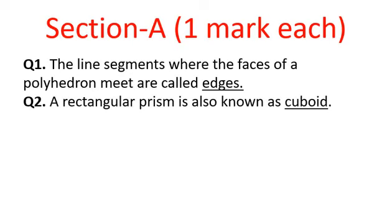Coming to the second question: a rectangular prism is also known as? A polyhedron whose base and top are congruent polygons and whose lateral faces are parallelograms is called a prism. A rectangular prism has congruent rectangles as base and top, and all six faces are rectangles. So a rectangular prism is also known as a cuboid.